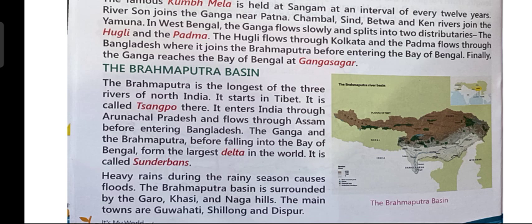Brahmaputra river enters India through Arunachal Pradesh, flows through Assam, and then enters Bangladesh, which is our neighboring country. Before falling into the Bay of Bengal, both the Ganga and Brahmaputra together form the world's largest delta, which is known as the Sundarbans delta.